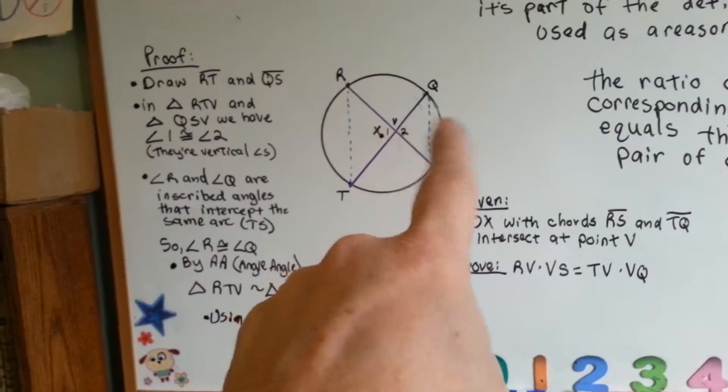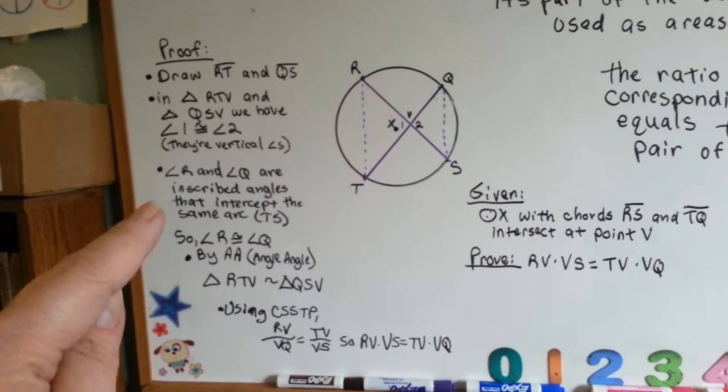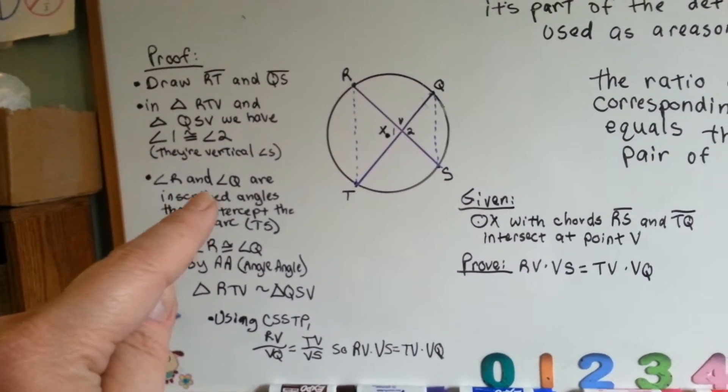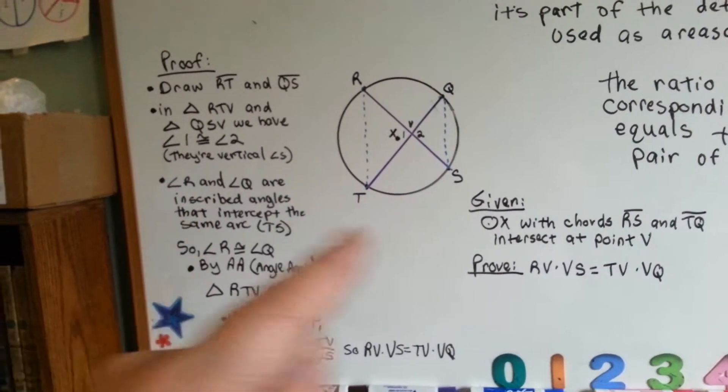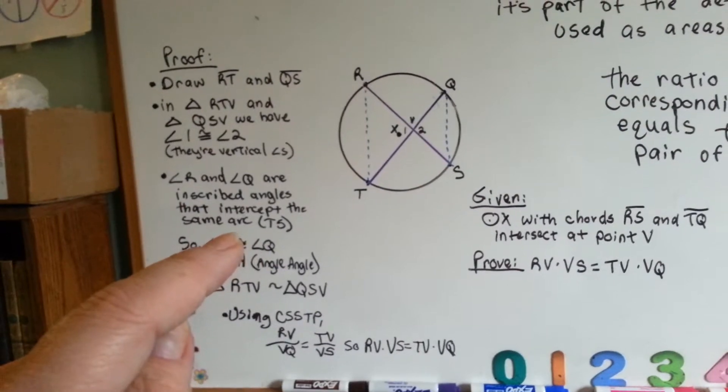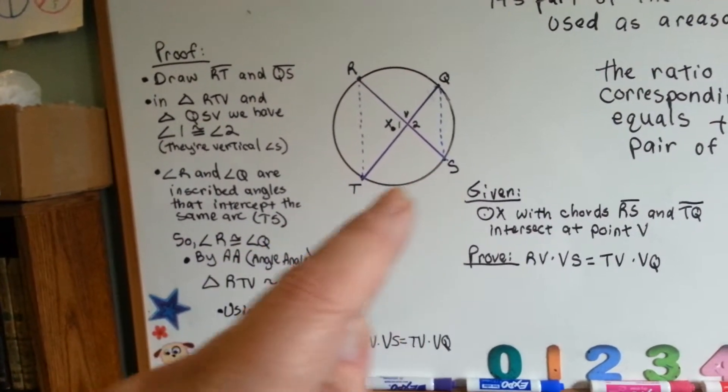You know what vertical angles do? They're congruent. Now, angle R and angle Q are inscribed angles. They're inside the circle. They intercept at the same arc, TS.